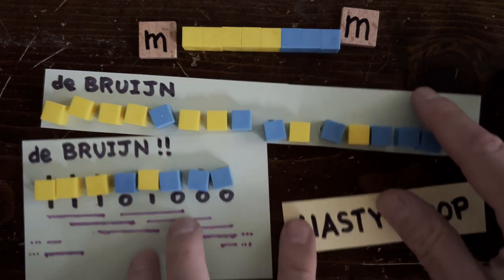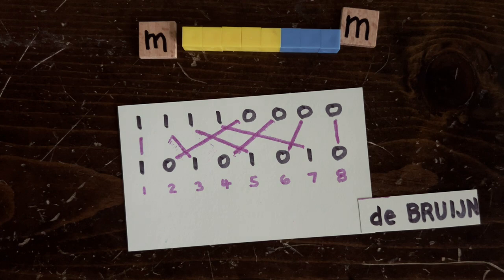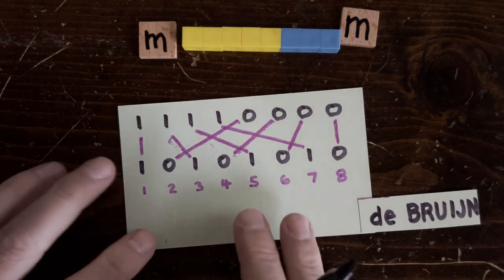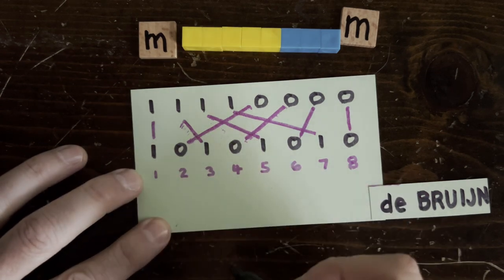Okay, so how do you make a de Bruijn sequence? All right, here's one way. Start with 1-1-1-0-0-0-0-0 and 1-0-1-0-1-0-1-0. Then connect up the 1s to the 1s and the 0s to the 0s, and write the indices below.